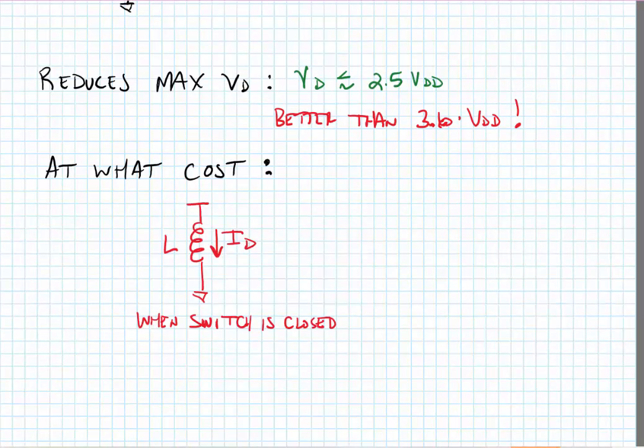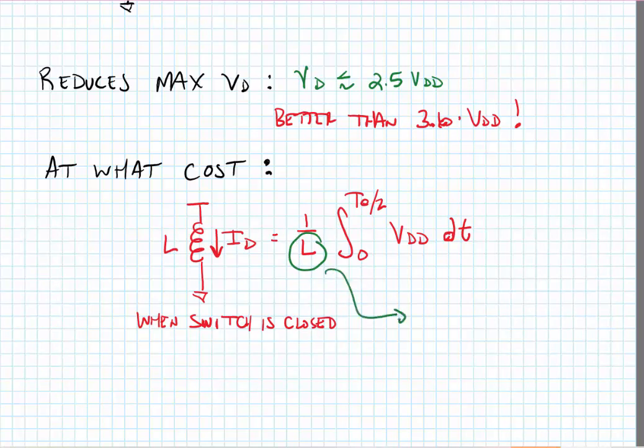So here we have that the drain current would be equal to 1 over the inductance times the integral from 0 to half of the period, which is the period of the switch closure, times the supply voltage. In other words, the voltage across the inductor dt. And so we can see immediately the impact of using a smaller inductor instead of a choke.